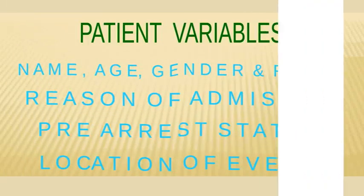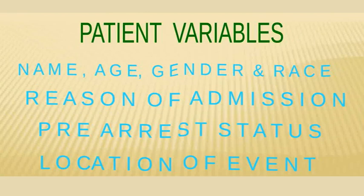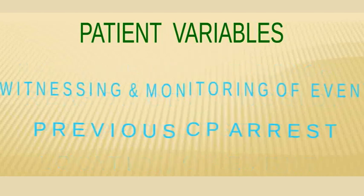For patient variables, we should be recording and documenting the complete details of the patient including name, age, gender, race, and address. What was the reason for admission — why was the patient admitted to our hospital? What was the pre-arrest status — was the patient morbid, fully normal and about to be discharged, or in the ICU? That has to be very clearly mentioned.